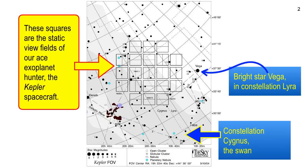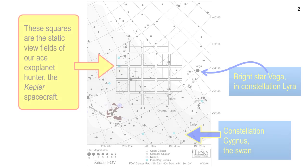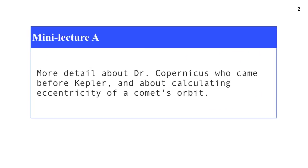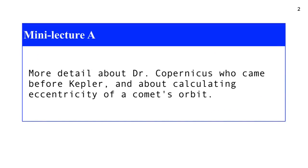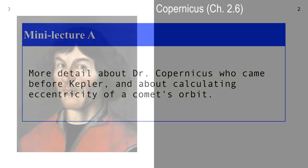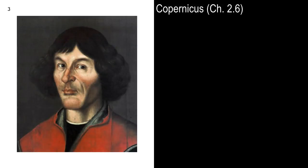So Kepler is nice, and we've been concentrating on him. But what we're going to do today is a little bit more detail about Dr. Copernicus, who came before Kepler. And then we're going to do some calculation of the eccentricity of a real comet. This is information from Chapter 2.6 and some additional reading.